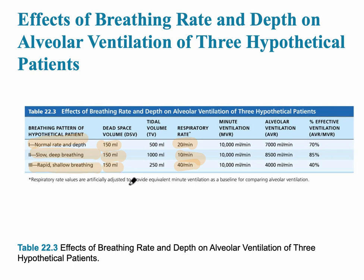In normal breathing, there's about 70% effective ventilation for the alveoli. In slow, deep breathing, it is much more effective, and more alveoli receive oxygen. In rapid, shallow breathing — as in hyperventilation — there is a very low effective alveolar ventilation rate of only 40%.